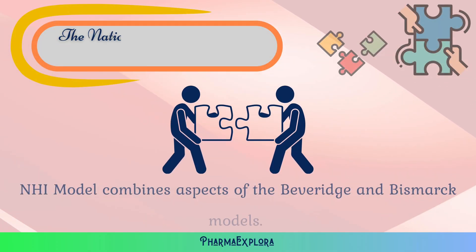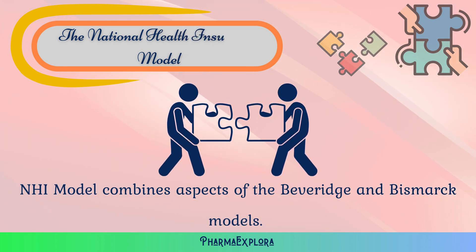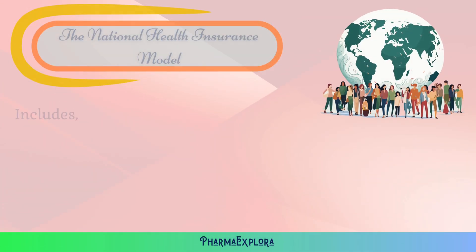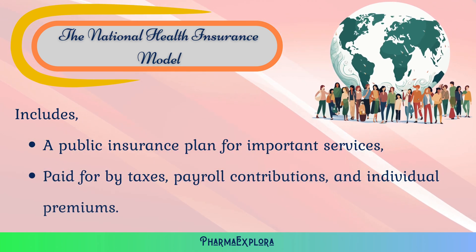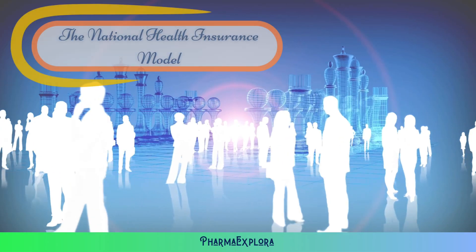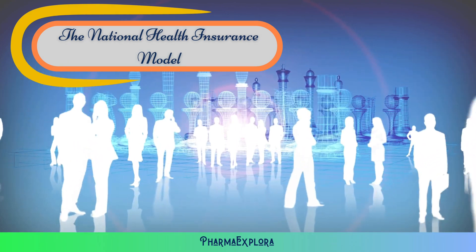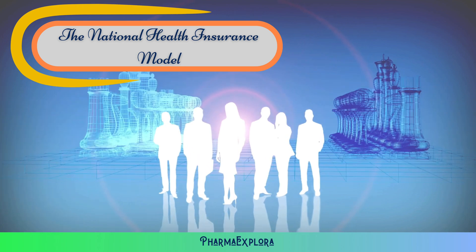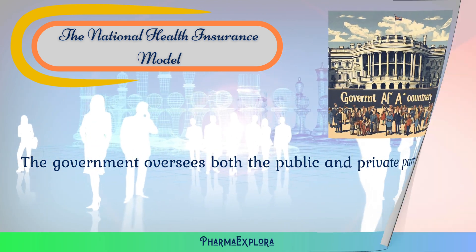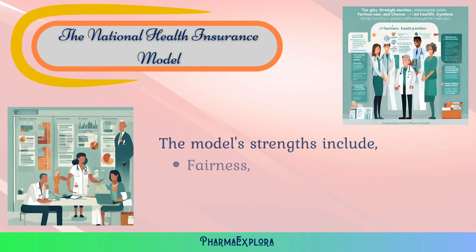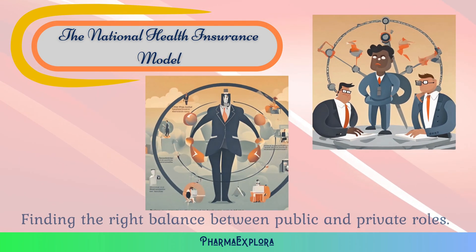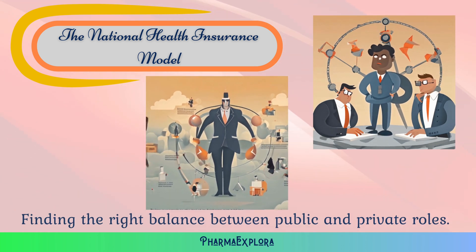The National Health Insurance model combines aspects of the Beveridge and Bismarck models. It includes a public insurance plan for important services paid for by taxes, payroll contributions, and individual premiums. Everyone must join to ensure many people are covered, and there's also a choice to get additional coverage with private insurance. The government oversees both the public and private parts. The strengths are fairness, cost control, and letting patients choose, while challenges include finding the right balance between public and private roles. Ongoing discussions aim to make the system work well and last a long time.